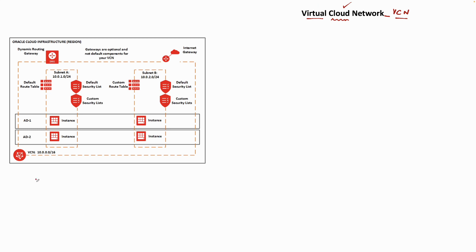Think of it as your private address space. Let's say you've created a tenancy in OCI and you need to create a VM cluster or a database. For all that, you need to have some kind of IP address space, and that private IP address space is known as a VCN or virtual cloud network.